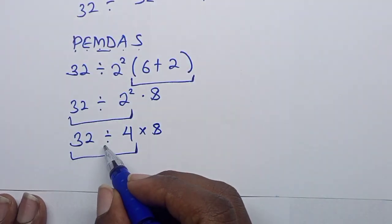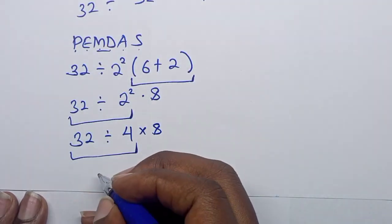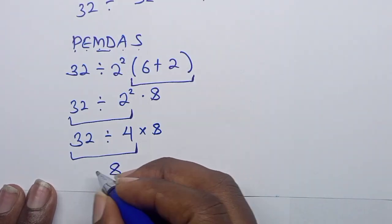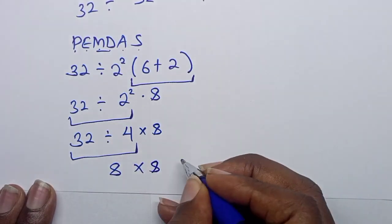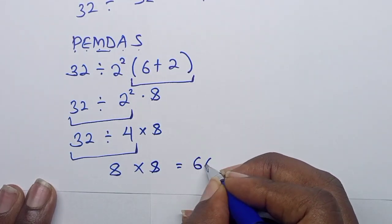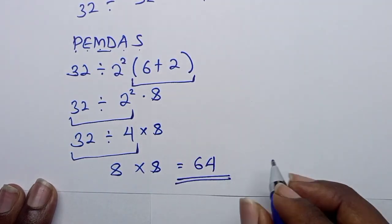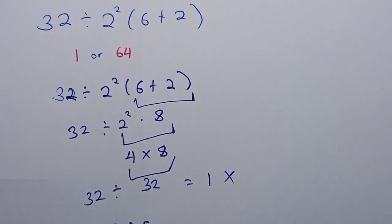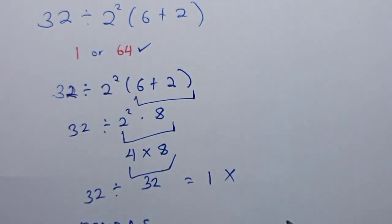So now 8 times 8, which equals 64. So the right answer is actually 64. This is the right answer, 64.